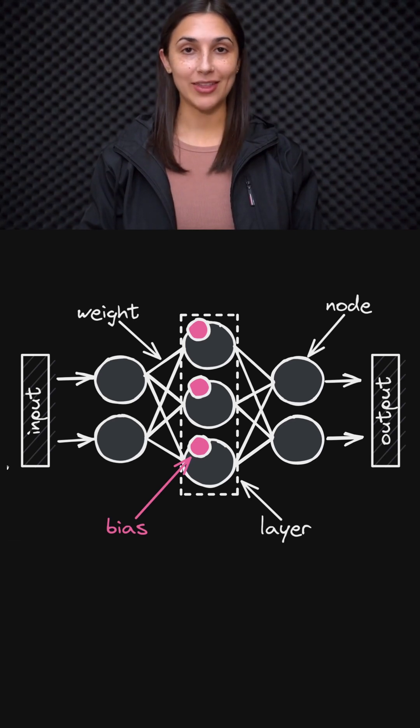Neural networks are made up of layers that contain nodes, which are connected to each other via weights. In this diagram here, everything that's in white is what we have learned about already as it pertains to neural network architecture.